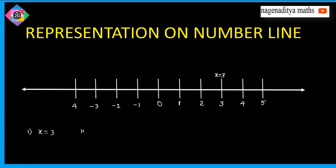The second problem is y plus 3 is equal to 0. This implies y is equal to minus 3. So we mark the point at minus 3 on the number line. On the number line, this is just a single point.